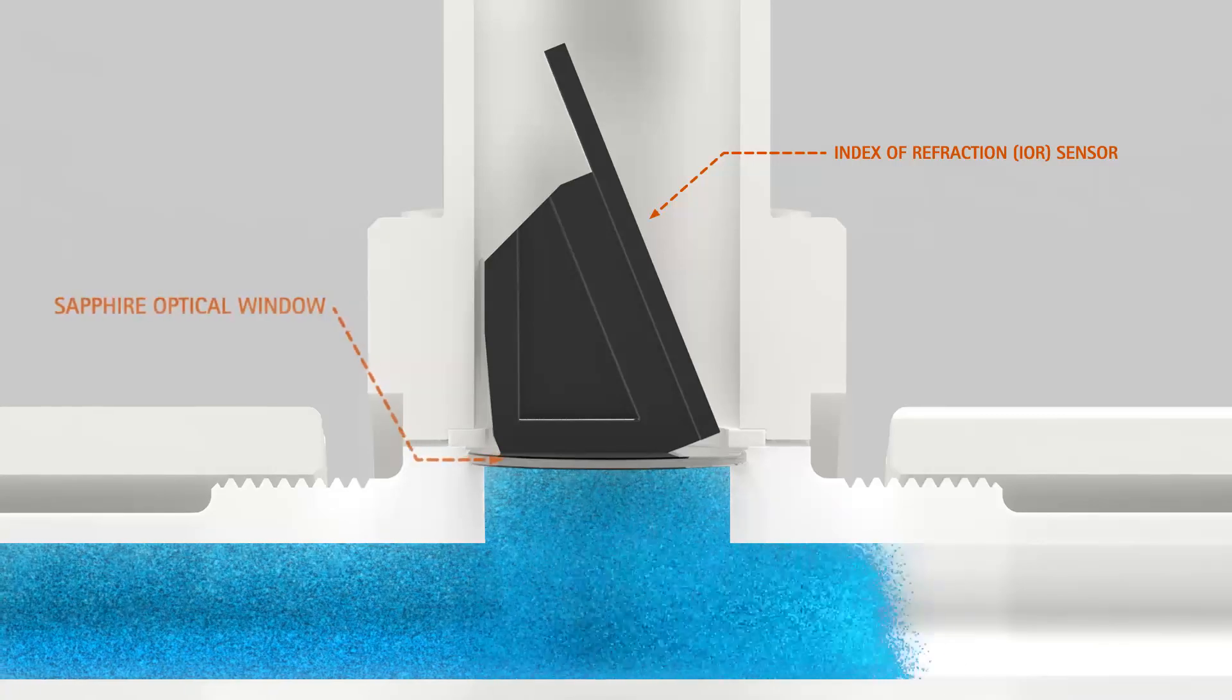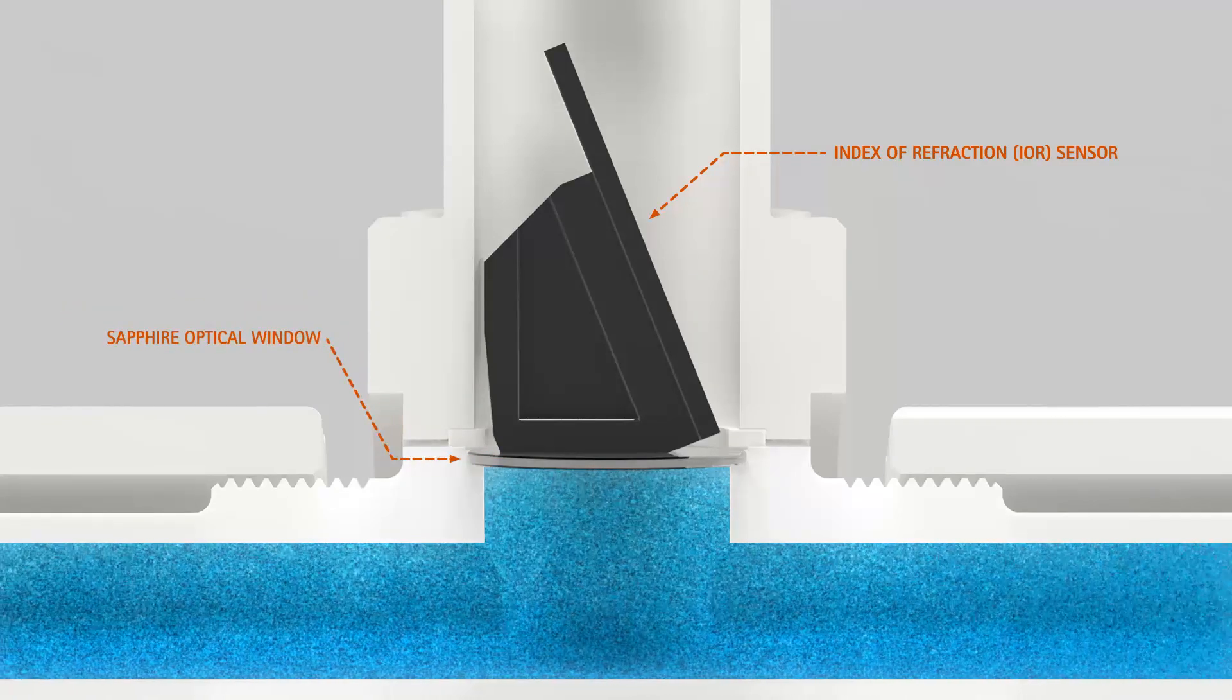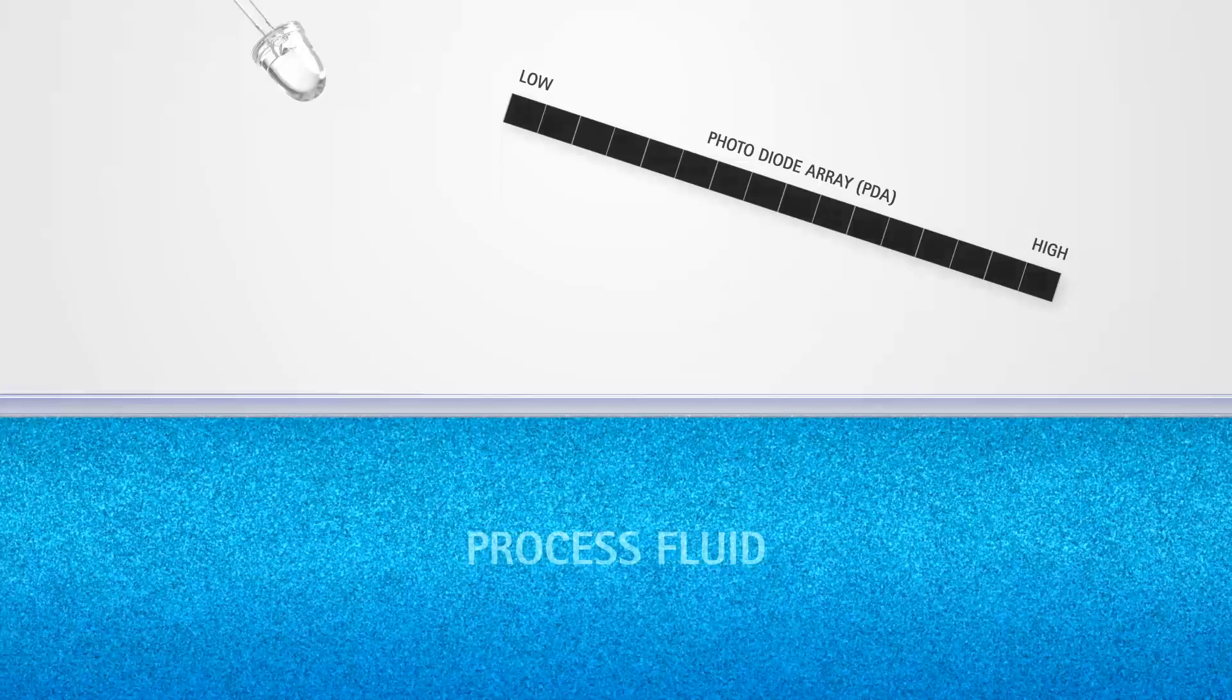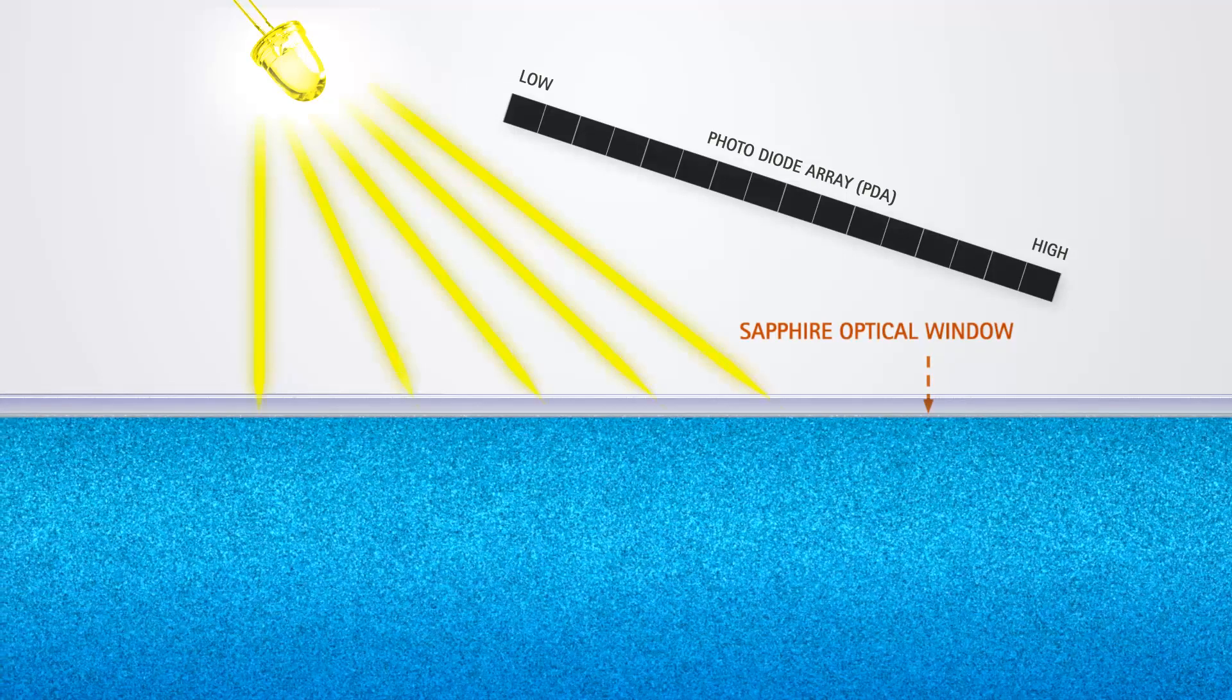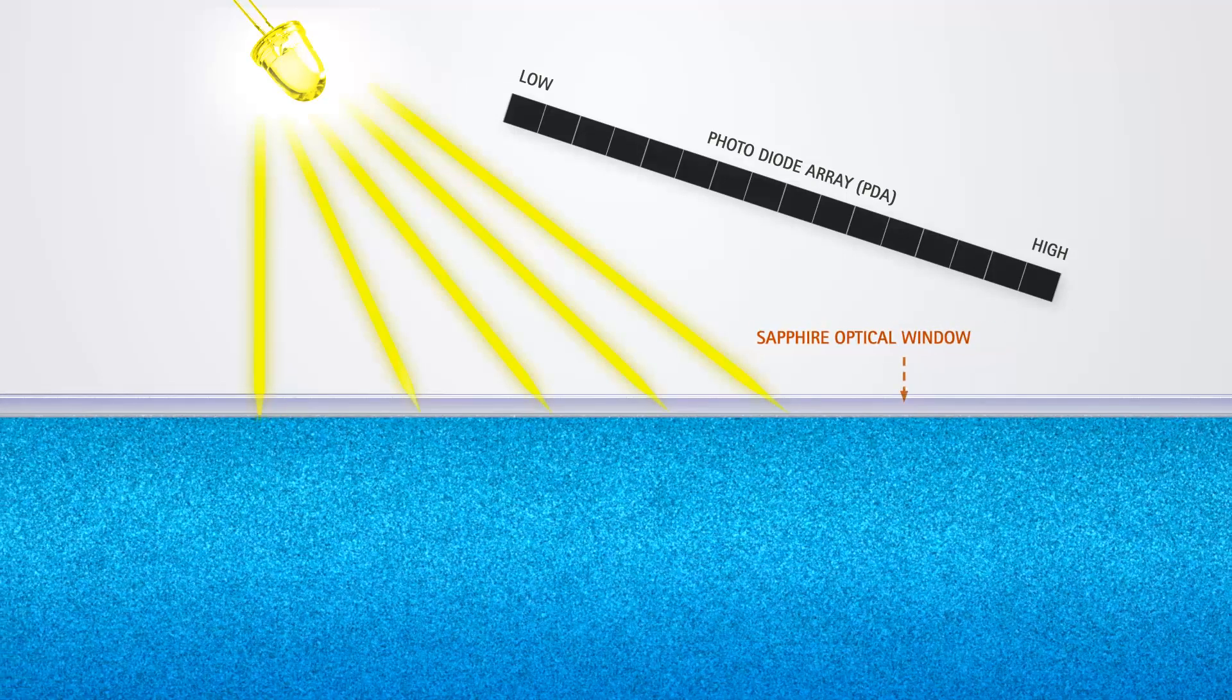The Integris Concentration Monitors utilize Index of Refraction as a direct measurement of how light reflects off the fluid while in contact with an optical window. This measurement is directly correlated to a chemical's concentration. To illustrate, here a light-emitting diode, or LED, shines light onto a sapphire optical window in contact with the liquid.